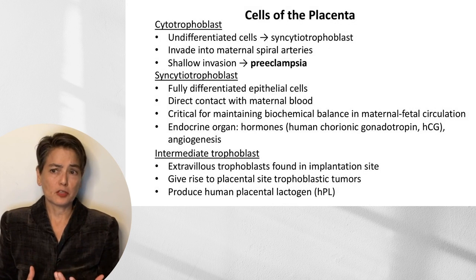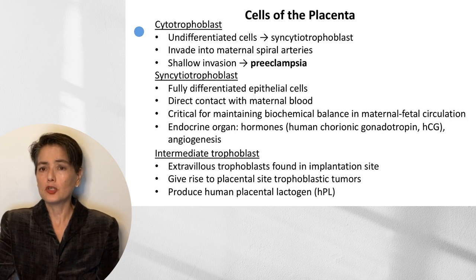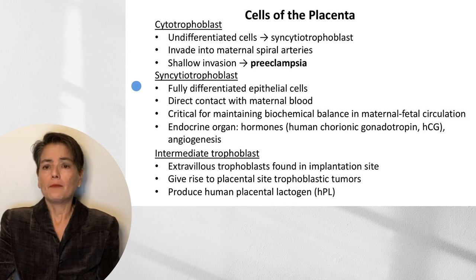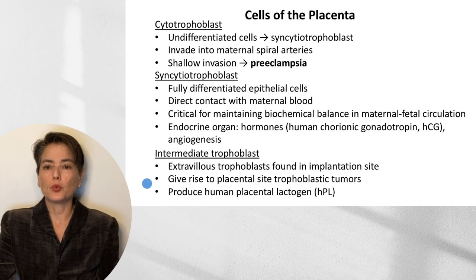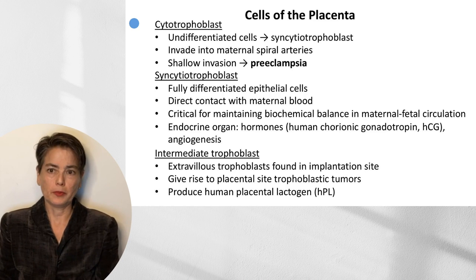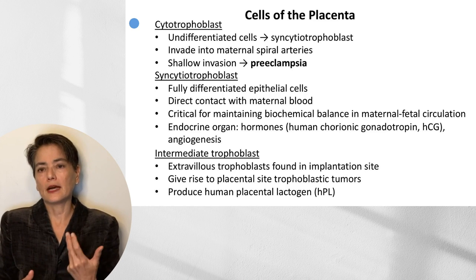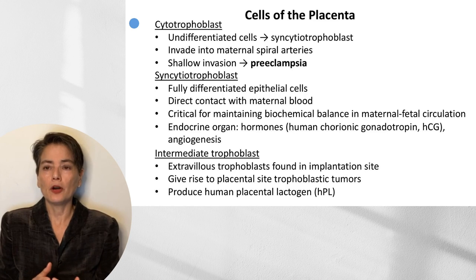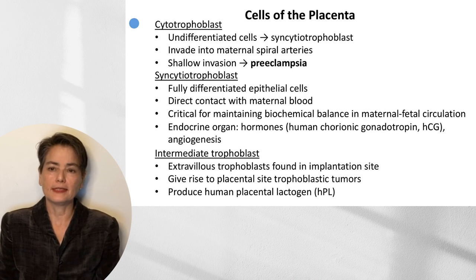Looking at the cells of the placenta, the major subtypes will be cytotrophoblast and syncytiotrophoblast. I'm also going to touch briefly on intermediate trophoblast, since it is relevant to one of the entities I'll be discussing. Cytotrophoblasts are undifferentiated cells that give rise to syncytiotrophoblast, and their role is to invade into the maternal spiral arteries and thereby ensure appropriate blood flow to the placenta.